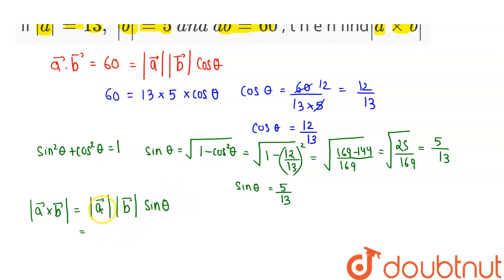So A vector is given as 13 and B vector is given as 5, and sin theta is 5 by 13. So this is equal to, now 13 gets cancelled out and 5 times 5 is 25. So this is our required answer and this completes our solution.